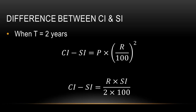Suppose the question states that the difference between compound interest and simple interest is 200, the rate of interest is 5%, and you need to find the principal amount. Then substitute all the values into the first formula to get the principal. If instead you are given the simple interest as 400 and need to find the rate of interest, substitute CI − SI = 200 and SI = 400 into the second formula and calculate.